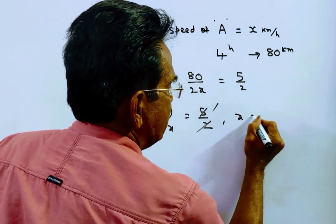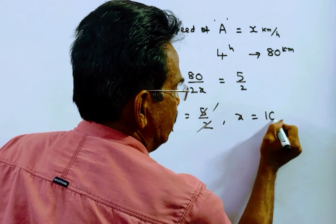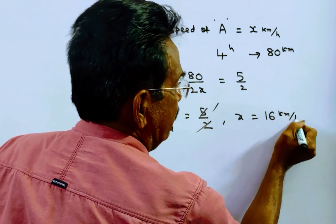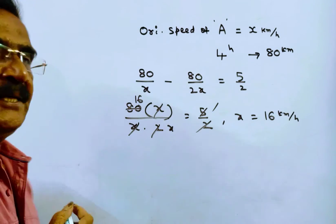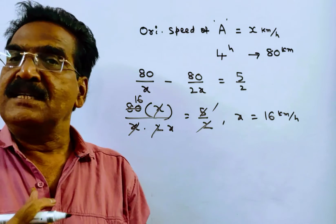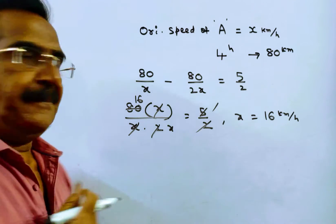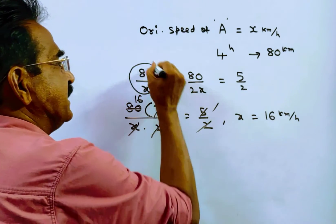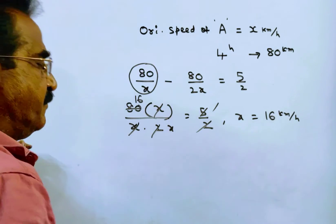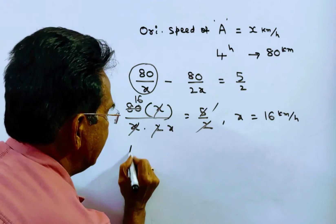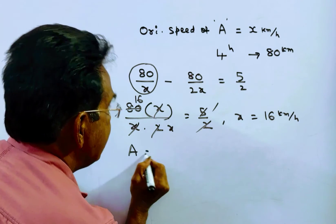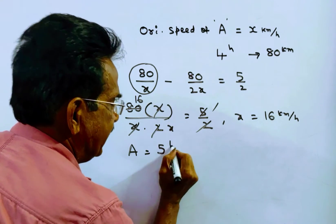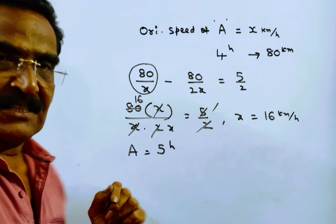So friends, x is equal to 16 kmph. So the speed of A is 16 kmph. A takes 80 by 16, which is five hours. A takes five hours.